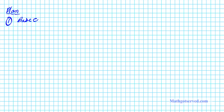For the base case, you want to show that the statement is true for the smallest condition in the set of acceptable integers. So show that n equals 1 is true.